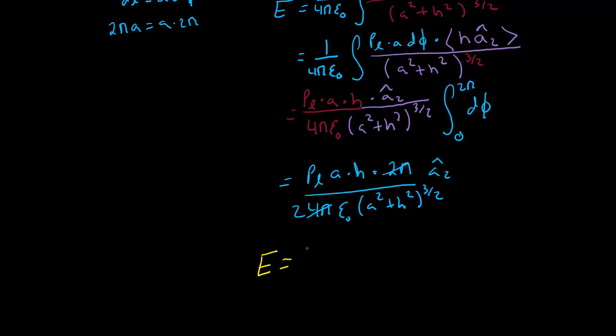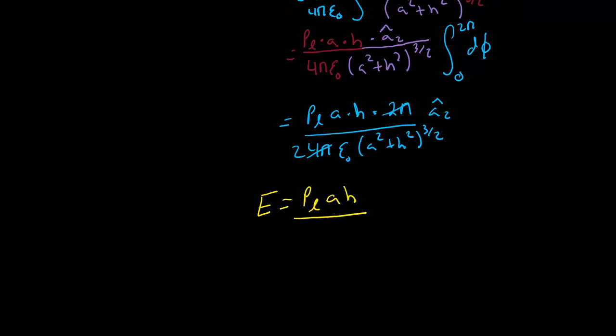E is equal to rho L A H over 2 epsilon 0, (A squared plus H squared) to the three halves, and then the vector AZ hat.